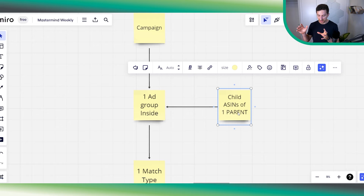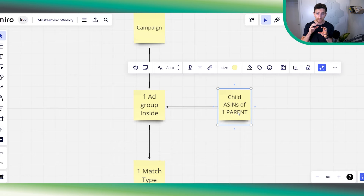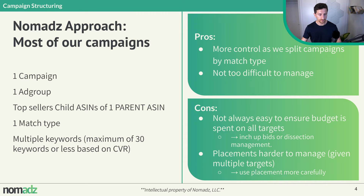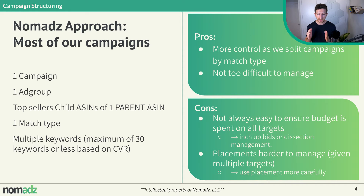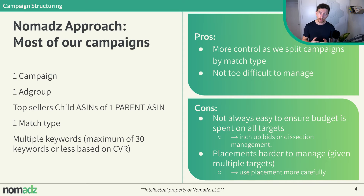We highly suggest to segment: if you have two parent ASINs, you have two different campaigns. So: one campaign, one ad group, top seller child ASINs of one parent ASIN, one match type, multiple keywords — a maximum of 30 keywords per ad group. Since we always put one ad group inside each campaign, campaigns and ad groups are effectively the same. We use fewer keywords if our conversion rate is lower.